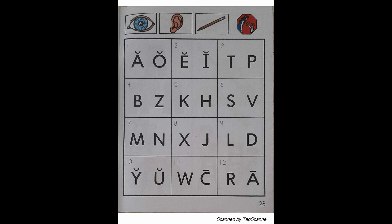Look at the letter in box 5. Listen as I say the sound of the letter: "H" — Hippopotamus — "H". With your pencil, circle the letter that reads "H".